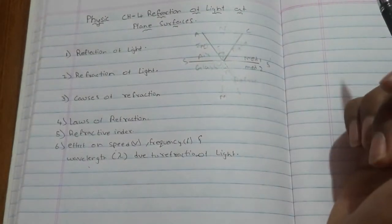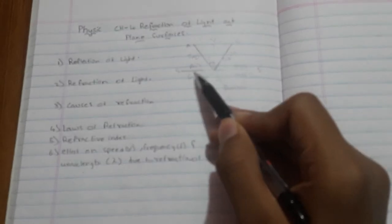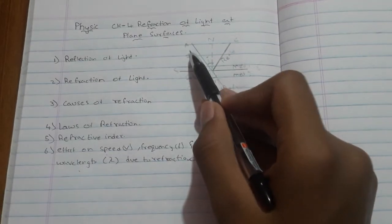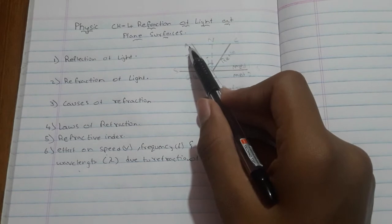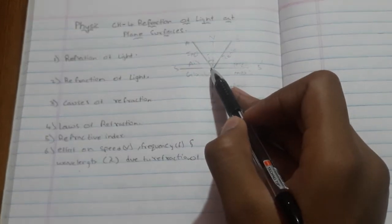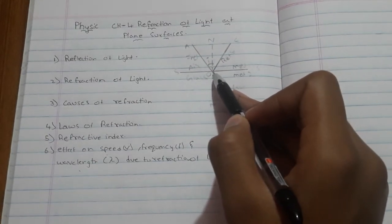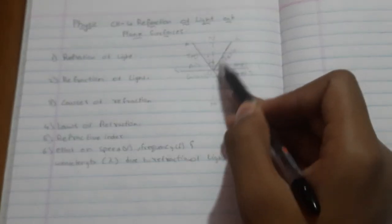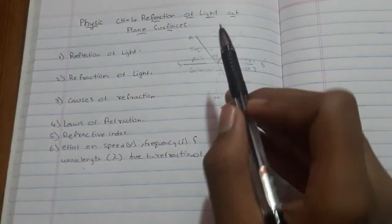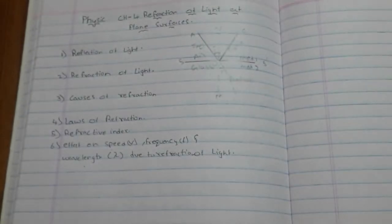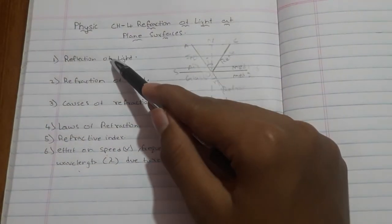See here — this is a polished surface. If the incident ray falls on a polished surface, it reflects back on the same medium. This is called reflection of light.